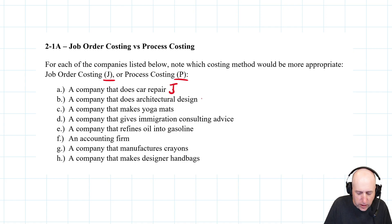A company that does architectural design: well, even if you're designing kind of a one size fits all product, every customer is going to be different. An architect's going to need to look at the lay of the land. Every customer is going to be different. This will be job order.